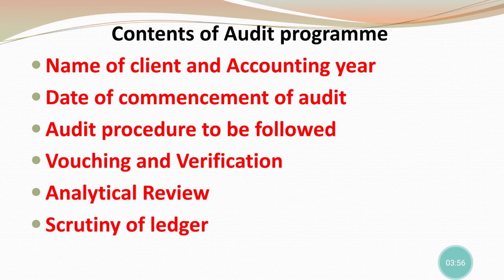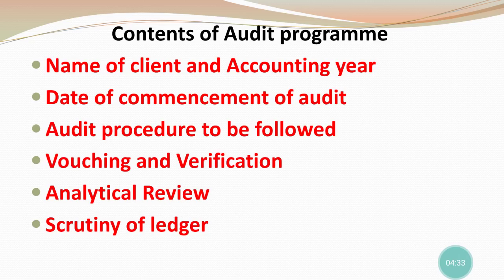First of all, the name of the client will be written in it. The accounting year will be written because accounting year is also important. The date of commencement of audit — when the audit started — will be written in the audit program. Then the audit procedures to be followed — which procedures we are following for conducting the audit — will be written. Then vouching and verification will be written, along with the evaluation system, internal control, analytical review, and scrutiny of ledger — meaning checking of the ledger. These are the contents of the audit program.